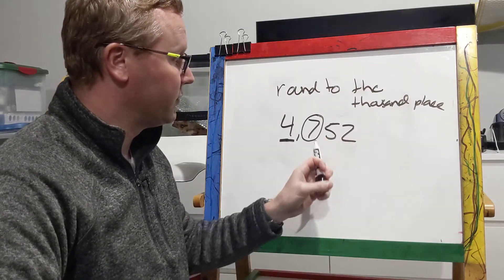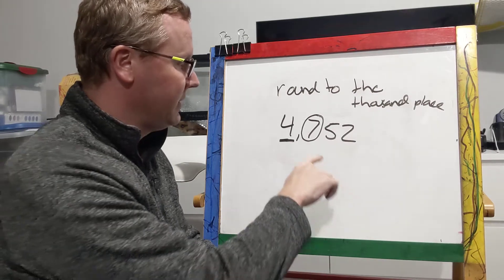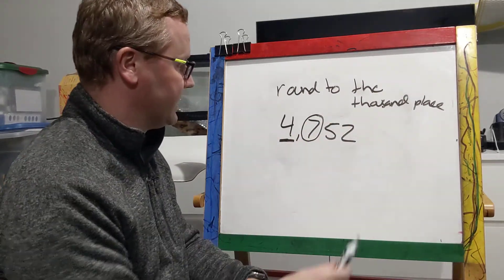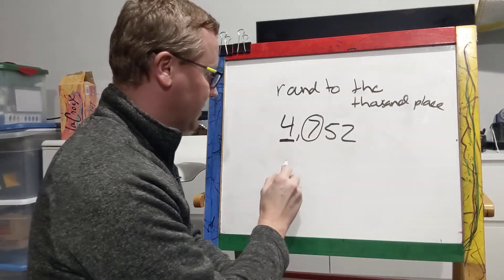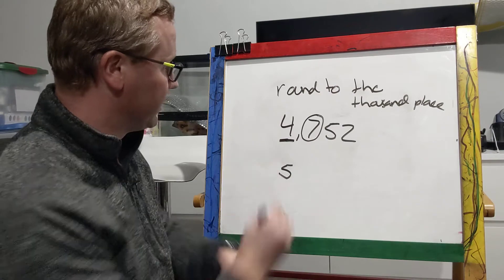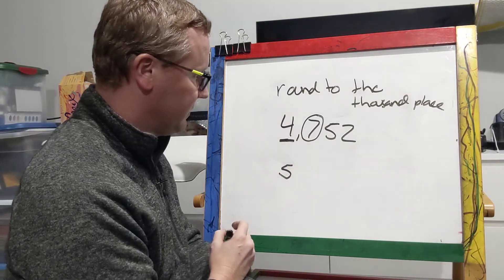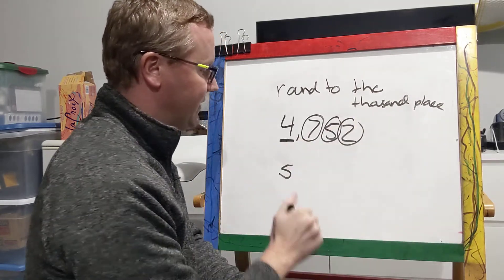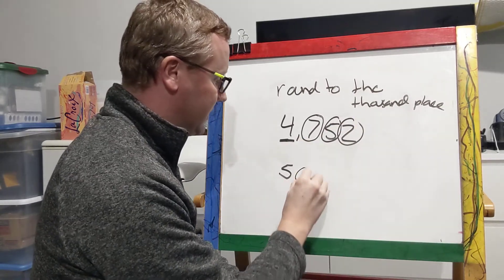So remember, zero through four stays the same. Five and above we add one to this number. So I'm going to add one to the number, so I make it a five when I'm writing my new number. I do a little plus one to a five. And again I circle all the numbers to the right of it because it tells me to make those zeros.